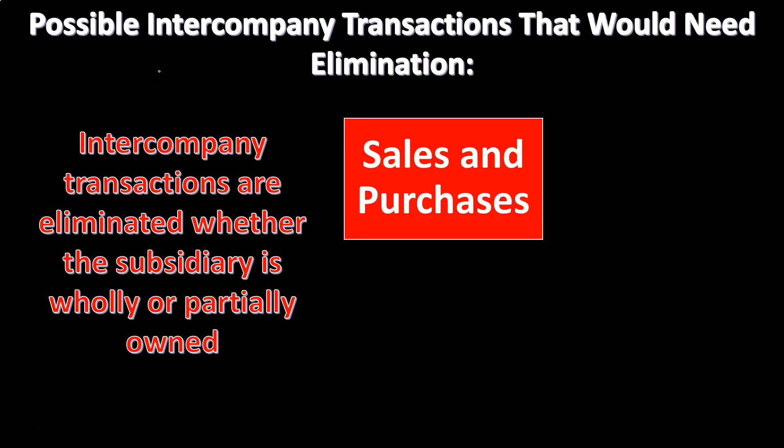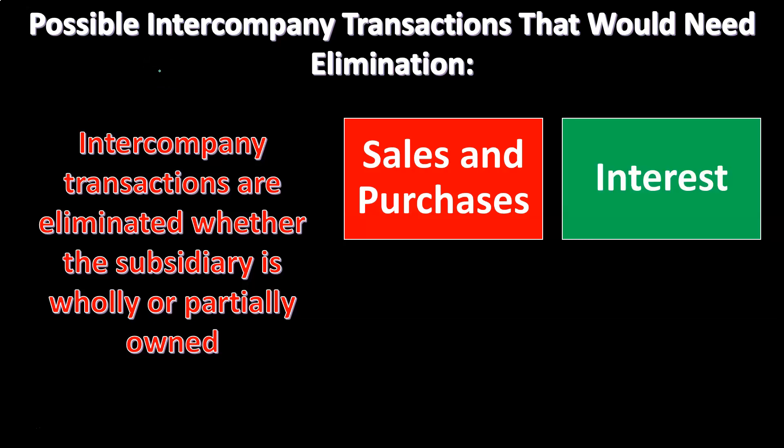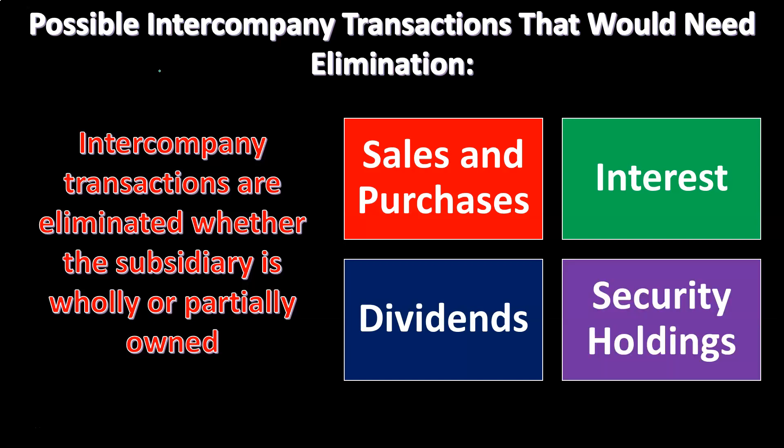Possible intercompany transactions that would need elimination include: sales and purchases that were intercompany — parent to subsidiary or subsidiary to parent — there could be interest, there could be debt from one to the other resulting in interest, there could be dividends, and there could be security holdings. These are types of things that could come about as intercompany transactions, and we're going to have to consider what the effect on the financial statements is and how we can basically eliminate them.